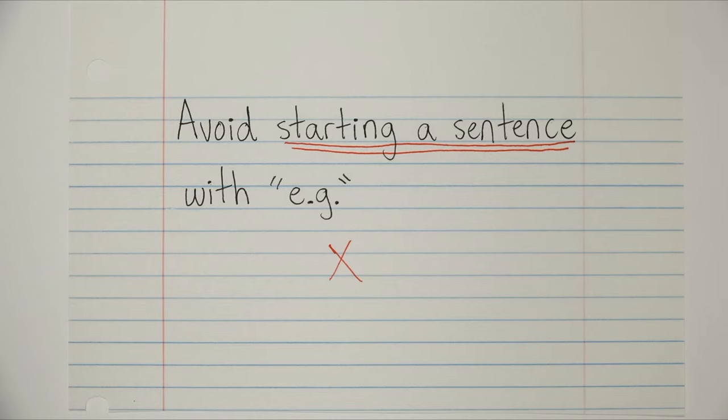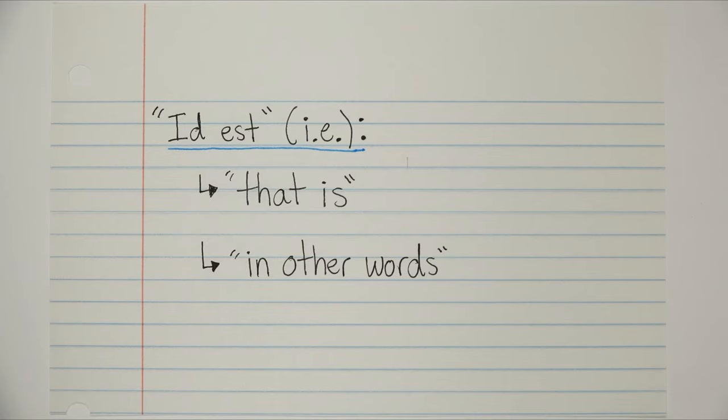But if you do start a sentence with it, like after a period, you would just capitalize the e. And if you end a sentence with it, the period at the end of e.g. can also serve as the period at the end of your sentence. You don't need two periods.